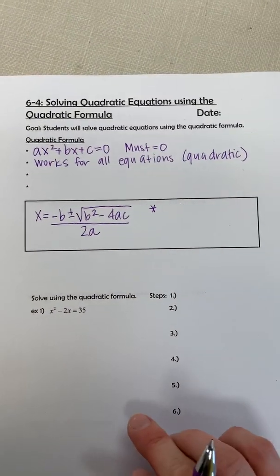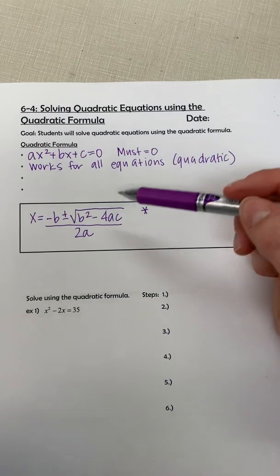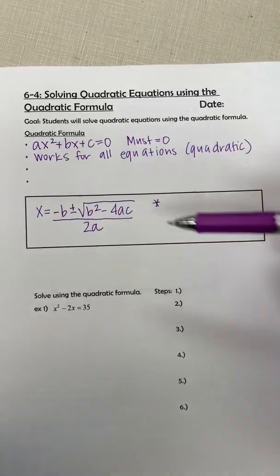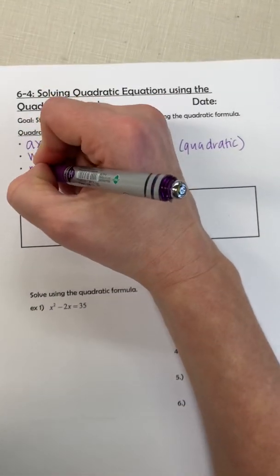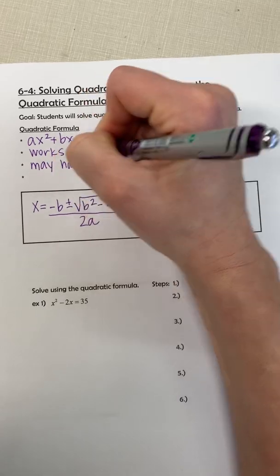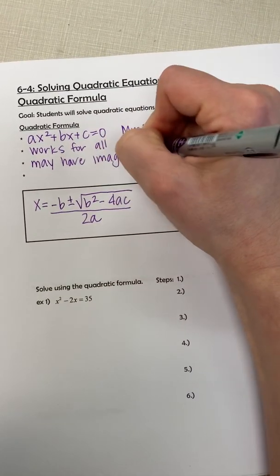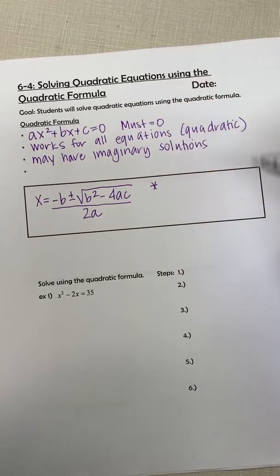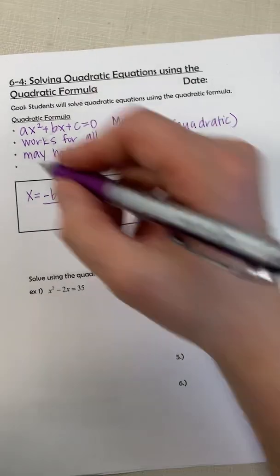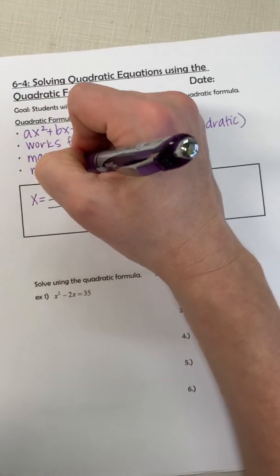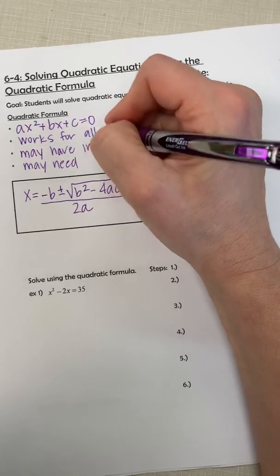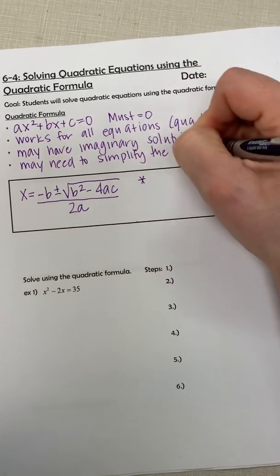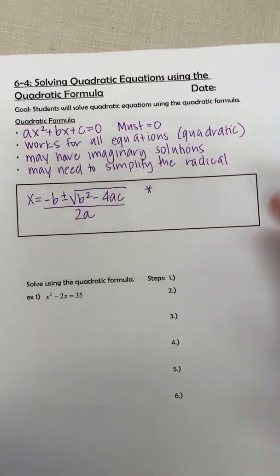Now one of the things with this, we might end up with imaginary answers because of the square root. We talked about imaginary last class. So hopefully you remember. We may have imaginary solutions and we also may need to simplify a radical, which is the square root.